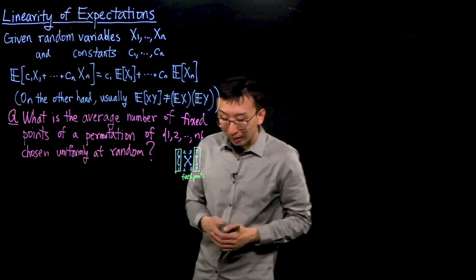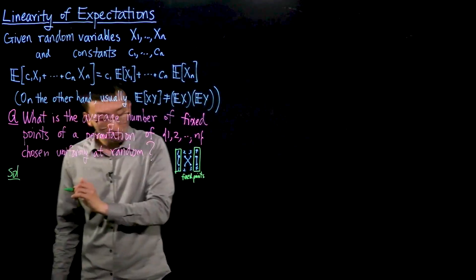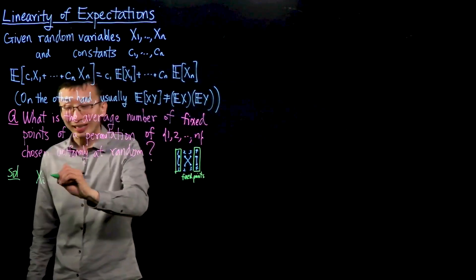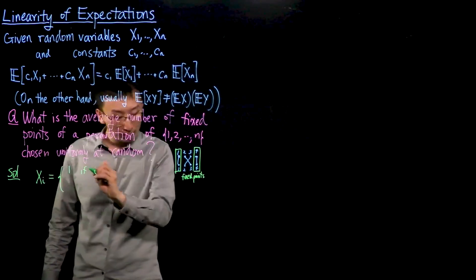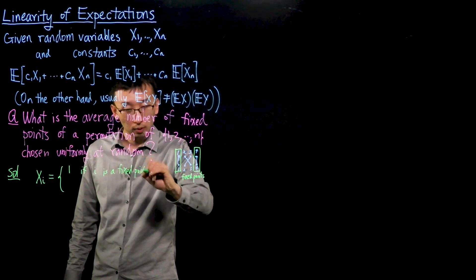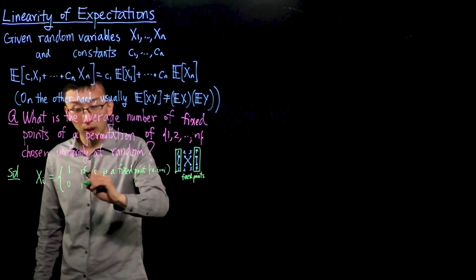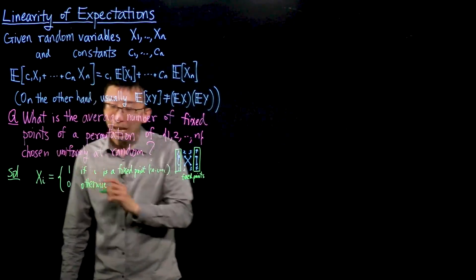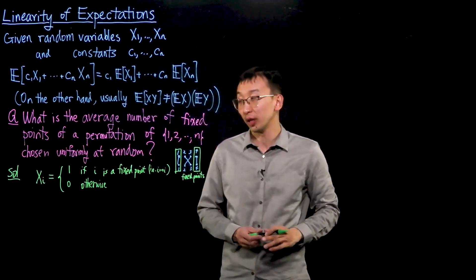However, if we look at this problem through the lens of linearity of expectations, there turns out to be a very quick solution. The method is to introduce some random variables. Let xi be a random variable that equals 1 if i is a fixed point, meaning that in this permutation i gets mapped to itself, and 0 otherwise. So xi is the indicator random variable for element i being a fixed point of this random permutation.